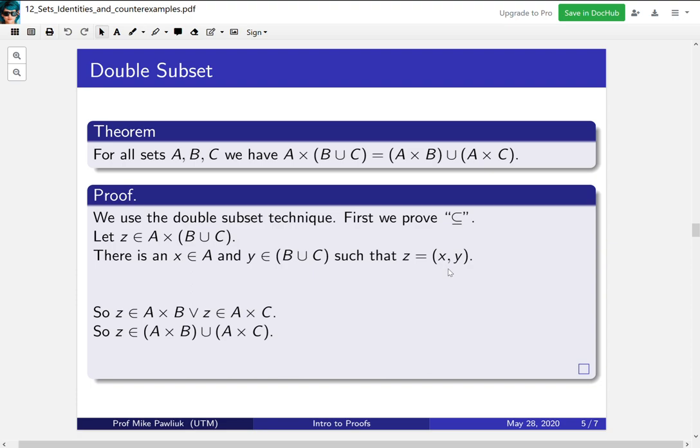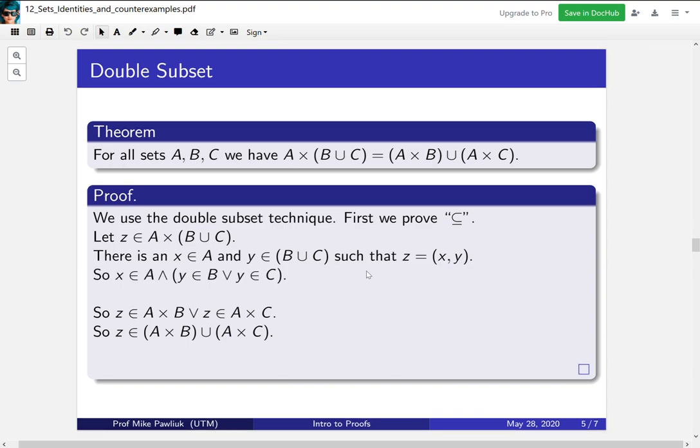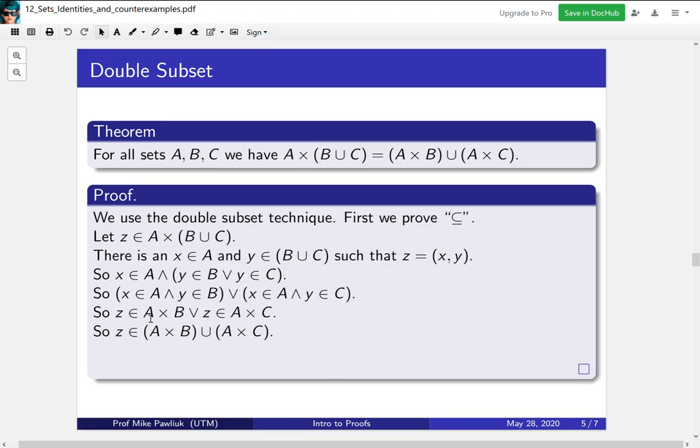Can we unwind definitions anymore? Yep. We can unwind the B union C. So let's do that. So this previous line says x is in A, and y is in B or y is in C. So we've written everything out here. Now we can do the same thing down here. We can extract those definitions. So here we extract what it means for z to be in A × B. It means that there's an x in the first coordinate and a y in the second coordinate.